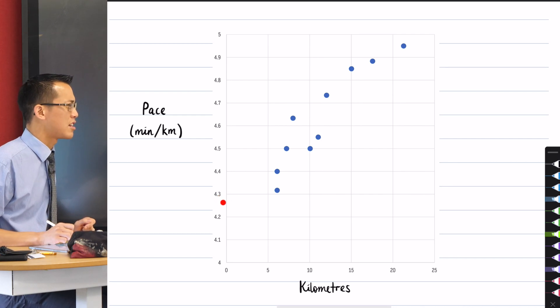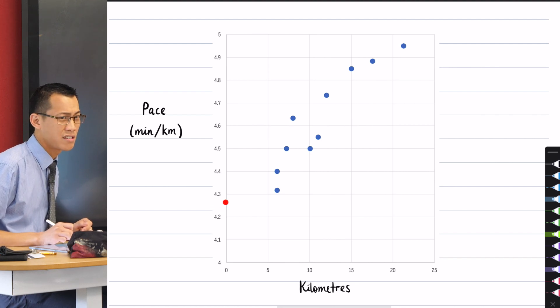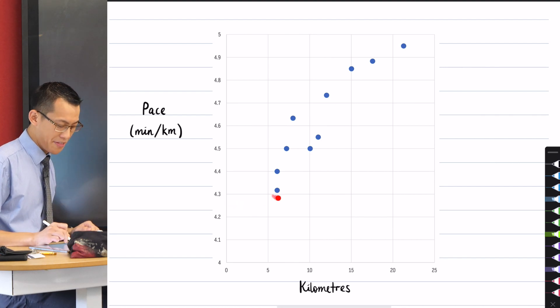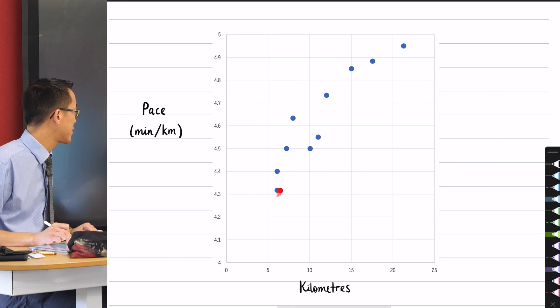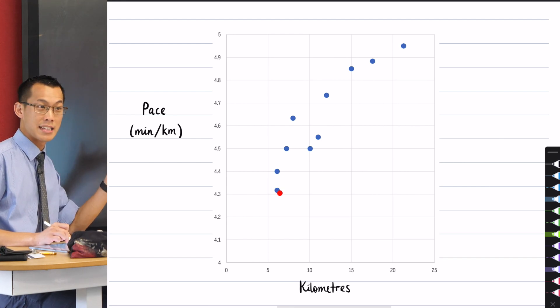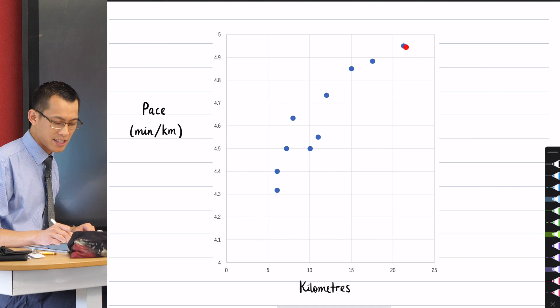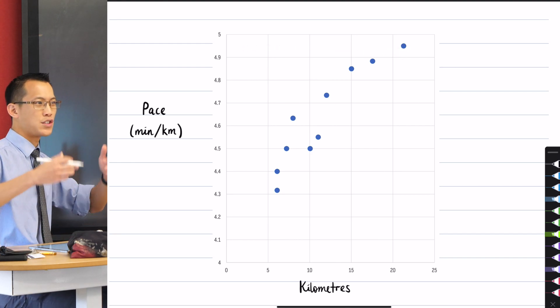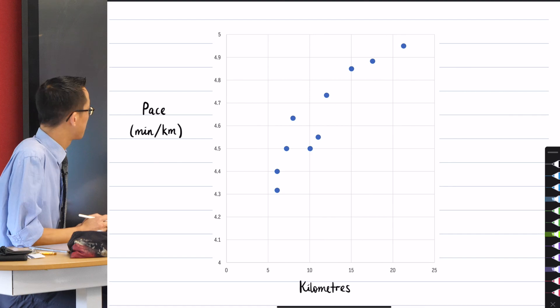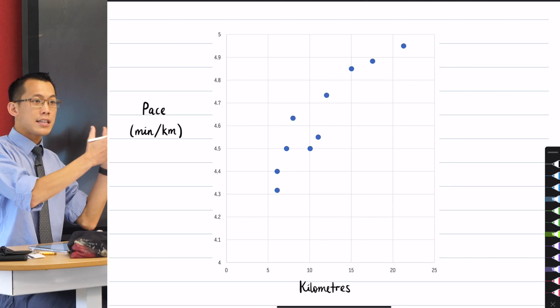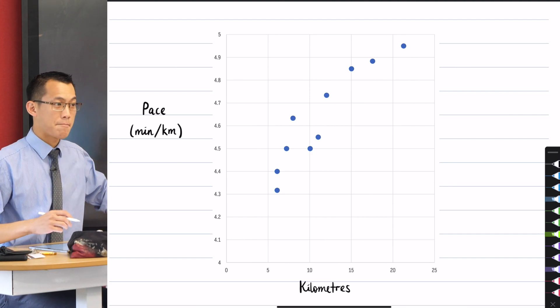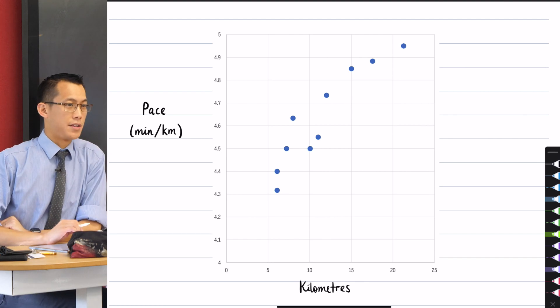So this is how many minutes it takes me to run a single kilometre on the basis of these particular runs that I've done. So just have a look. 4.3 minutes - that's like four minutes and, I don't know, like 20 seconds-ish, right? That's the very fastest I can run. In fact, if memory serves, I think that's four minutes and 19. And then up here, that's something like, that's close to five minutes, right? Like four minutes, 57, 58, something like that. Now these are the two variables, right? Pace and kilometres.